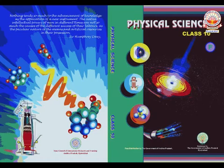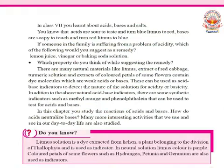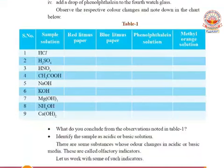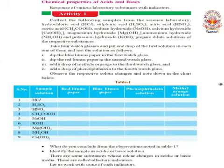Today I would like to explain the chemical properties of acids and bases. Before going into the details, let us first see some examples. Hydrochloric acid, sulfuric acid, nitric acid, and acetic acid are examples of acids. Sodium hydroxide, potassium hydroxide, magnesium hydroxide, ammonium hydroxide, and calcium hydroxide are examples of bases.